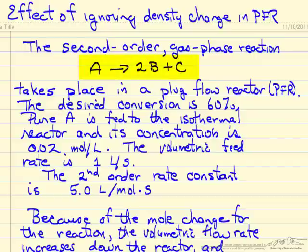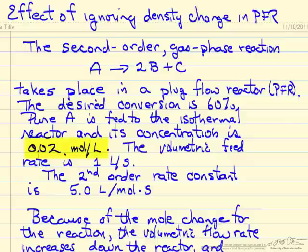We have a gas phase reaction where 1 mole is reacting to 3 moles of product. Using a plug flow reactor we want 60% conversion. We're feeding just A to the reactor, and we're given the concentration, which relates to the pressure and temperature for an ideal gas, and we're given the volumetric flow rate of 1 liter per second. It's a second order reaction, and we have the rate constant.